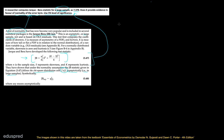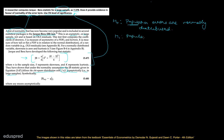Now let's start writing the solution. The null hypothesis is that the population errors are normally distributed. Note that I have written 'population error' because we are talking about the test of normality of the population error term. The alternate hypothesis is that the population errors are not normally distributed.